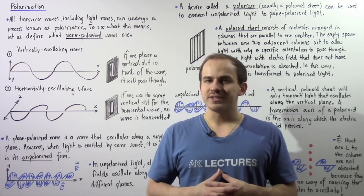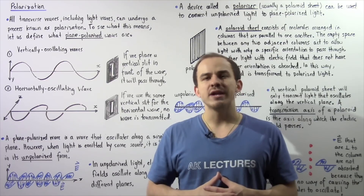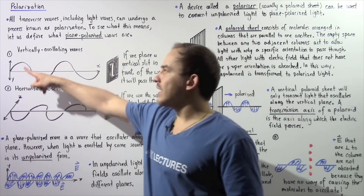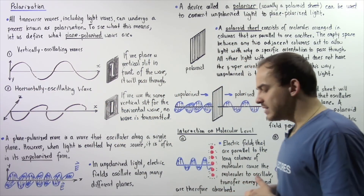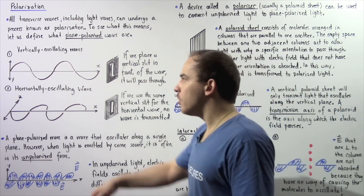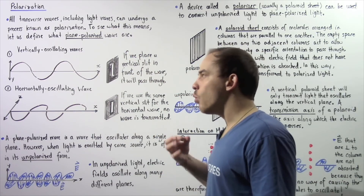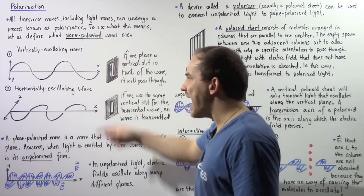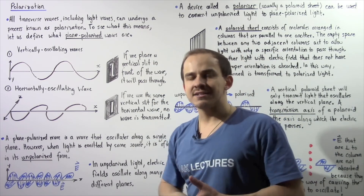Before we examine polarization, let's define a concept known as a plane polarized wave. In Diagram 1, we take a string or a cord and pull on it along the y-axis, creating a wave that oscillates along the y-axis and propagates to the right along the x-axis.